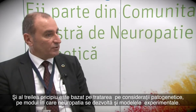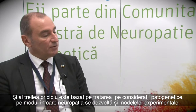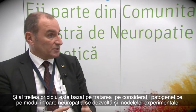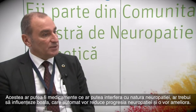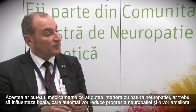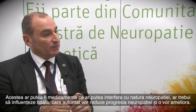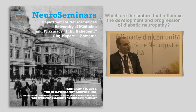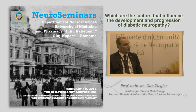The third cornerstone is treatment based on pathogenetic considerations — how neuropathy develops in experimental models. These should be drugs which are able to interfere with the natural history. These should be disease-modifying treatments which ultimately would reduce the progression of neuropathy or even improve it.